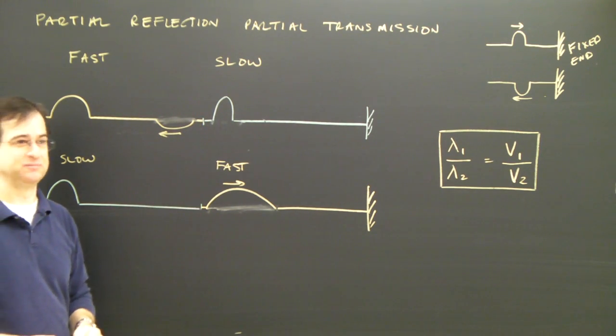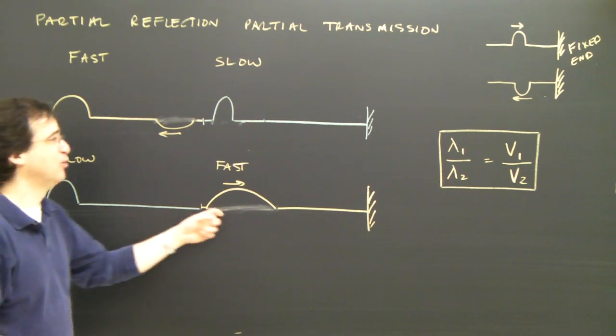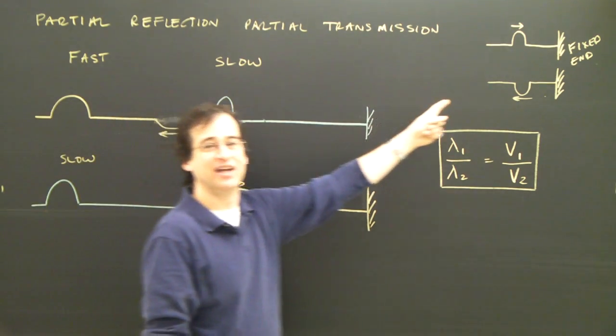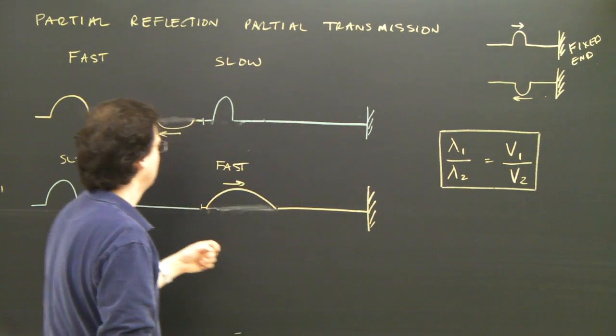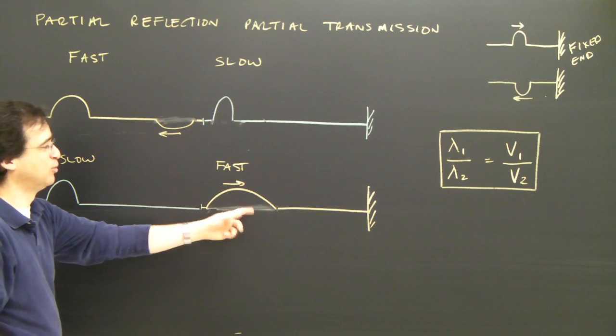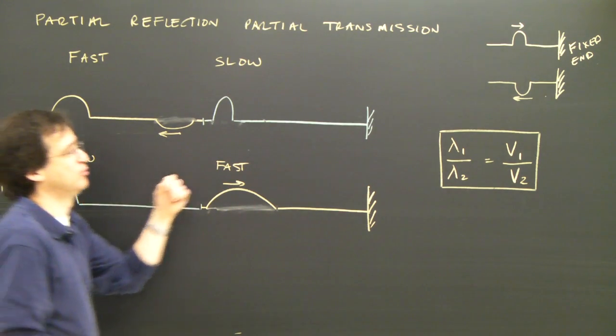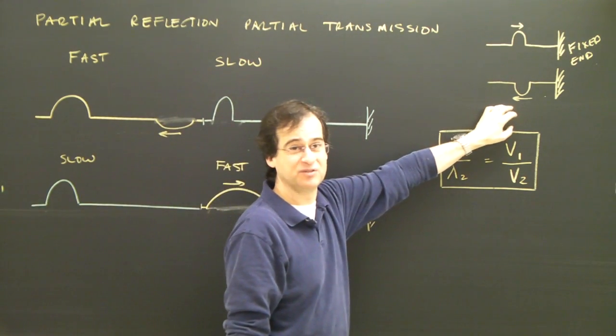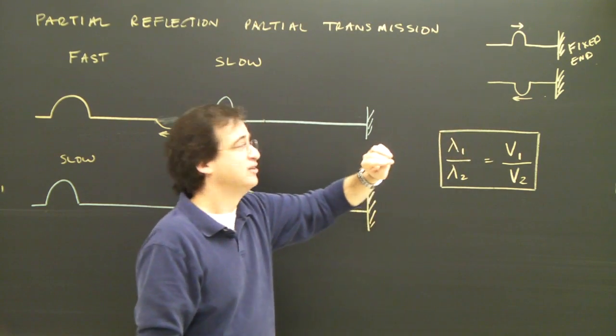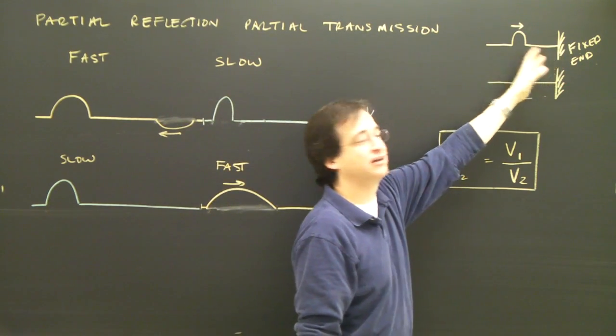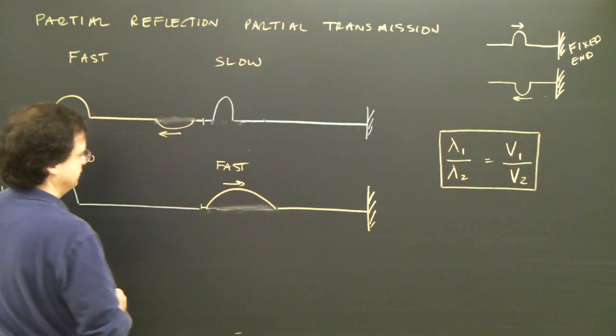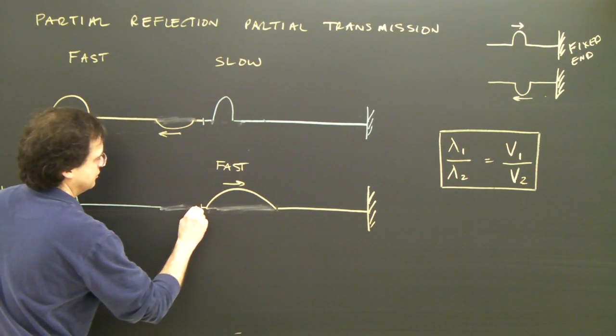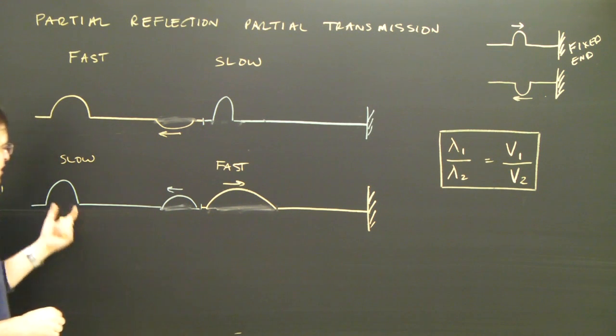Now the reflected portion. Well, it's going from slow to fast. That's not like hitting a fixed end. Hitting a fixed end is having trouble going into a material. So it's not having trouble getting into this material. So it will reflect like an open end. It will reflect opposite to what this would do. And from an open end, you get something that hits an open end and comes back in phase. So I would expect the reflected portion to be in phase and the same wavelength as it was in this material.